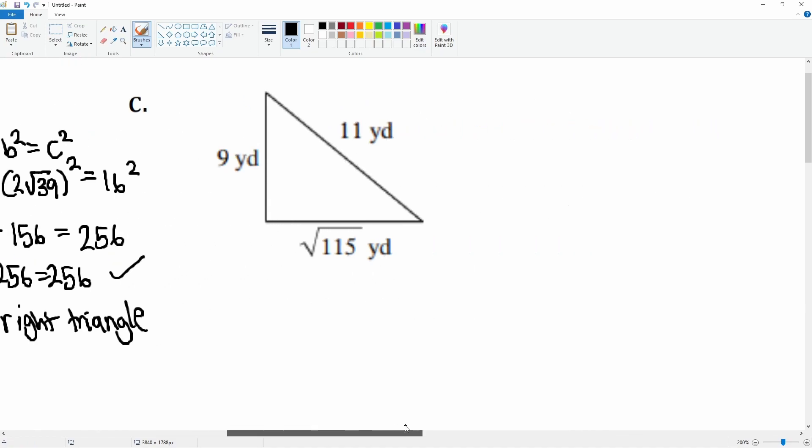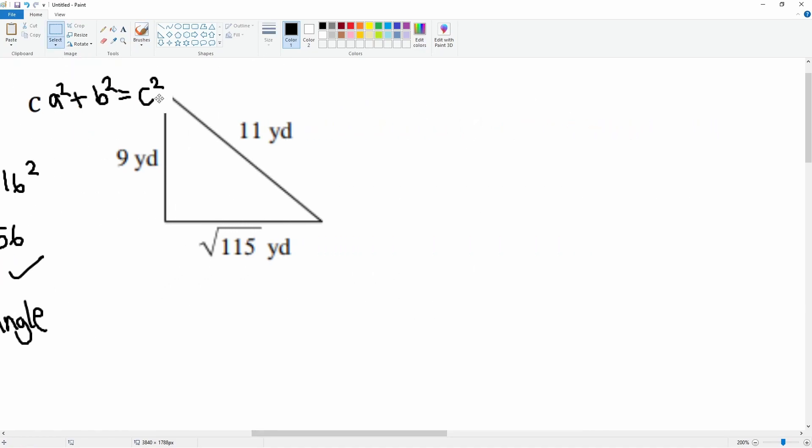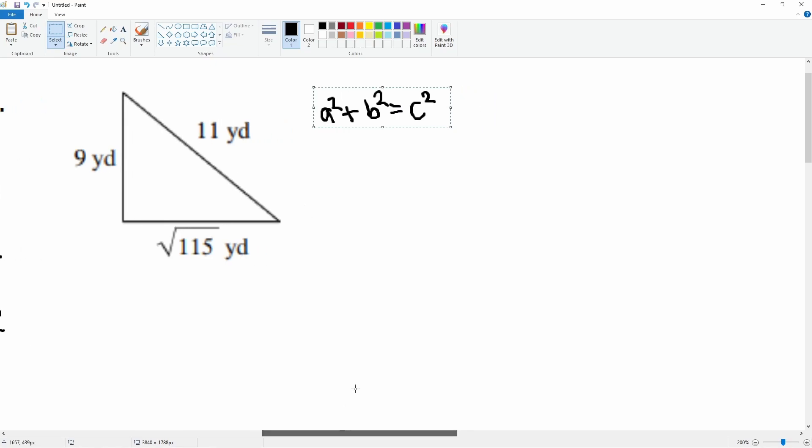Let's do this one, which is c. Here is our equation: a squared plus b squared equals c squared. A can be equal to 9, b can be equal to radical 115, and c can be equal to 11.